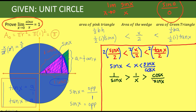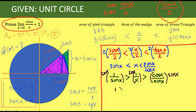Now multiply each term by sine of x. Since sine of x is positive in our figure, the inequality direction stays the same. Canceling sine of x gives: 1 is greater than sine of x over x, which is greater than cosine of x.